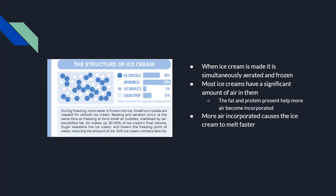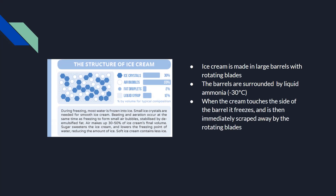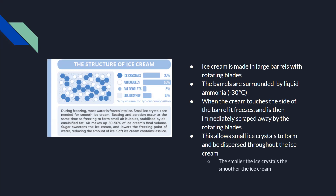More air incorporated actually causes the ice cream to melt faster. Most commercial ice creams have a lot of air incorporated, which helps mass-produce them more easily and allows less product to fill larger containers. Commercially, ice cream is typically made in large barrels with rotating blades, surrounded by liquid ammonia that keeps the barrels below minus 30 degrees Celsius. As the cream touches the sides and freezes, it's immediately scraped away by the rotating blades, allowing small ice crystals to form and disperse throughout. Higher quality ice cream will have these smaller ice crystals, giving it a smoother texture.